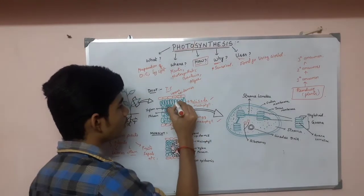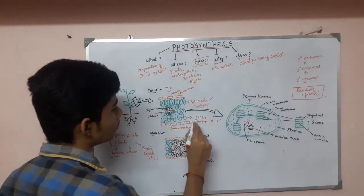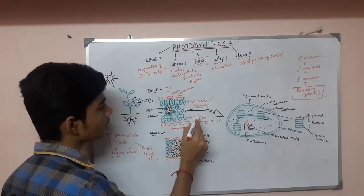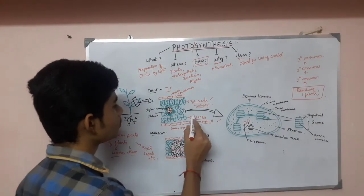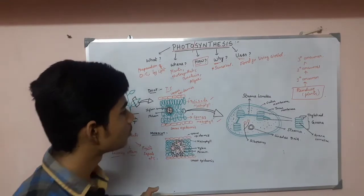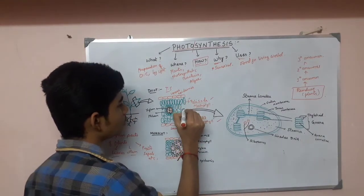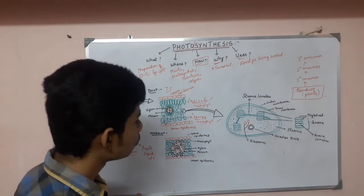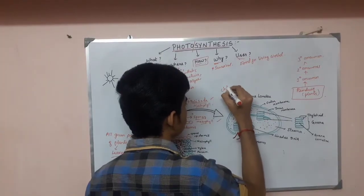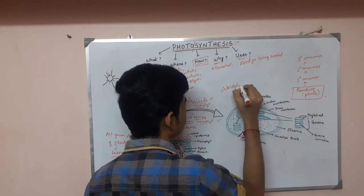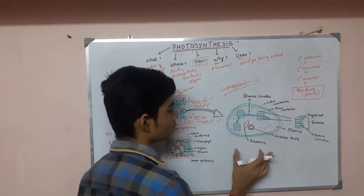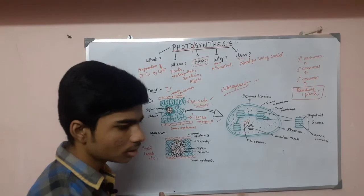The palisade mesophyll contains chloroplast, and the spongy mesophyll also contains chloroplast. The spongy mesophyll is mainly involved in gas exchange in plants, but it also contains chloroplast. The organelle in the palisade mesophyll is known as chloroplast. Photosynthesis takes place in the structure known as chloroplast.